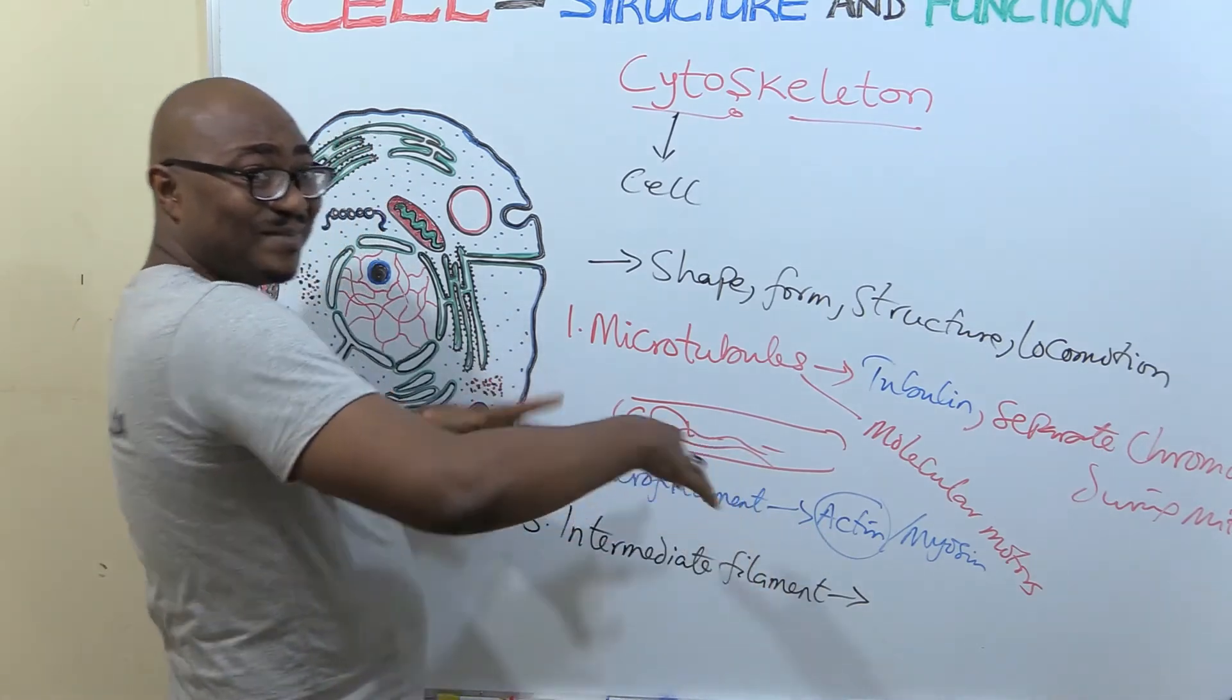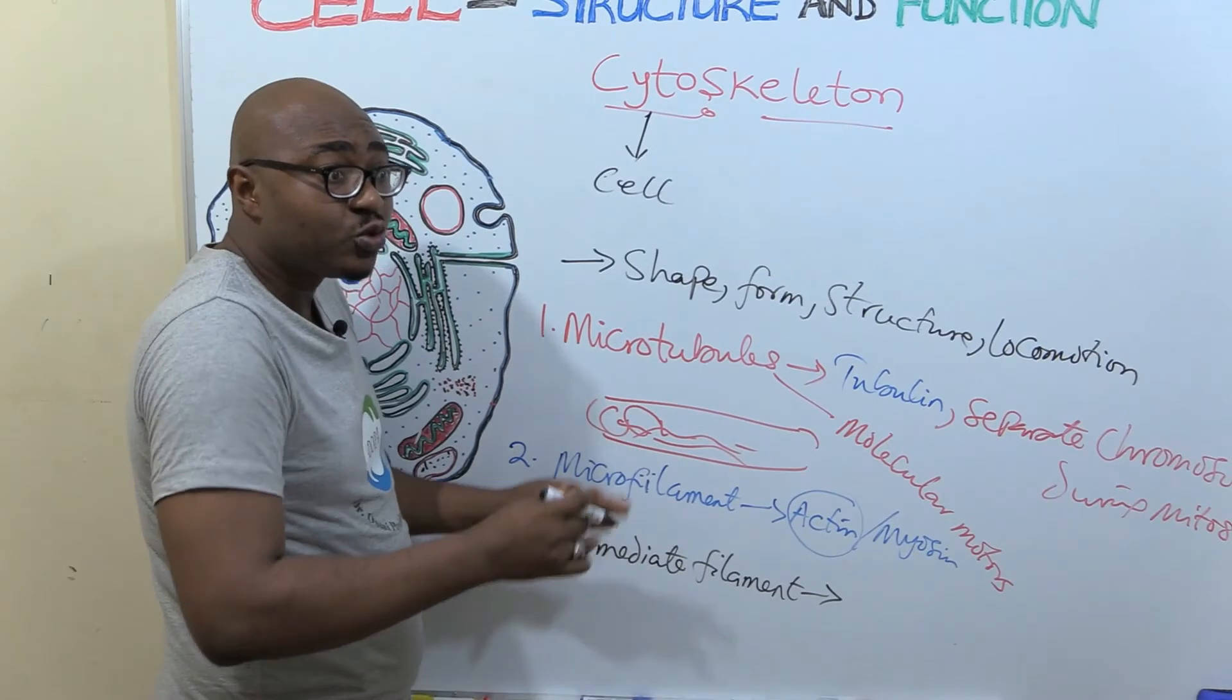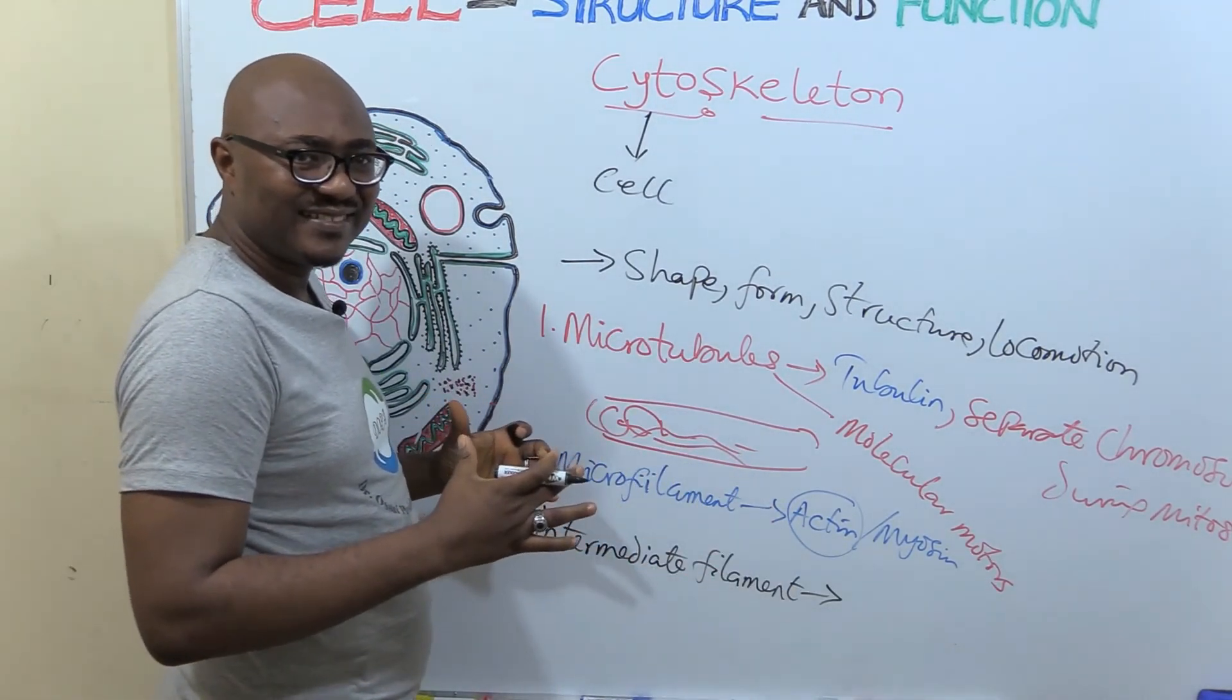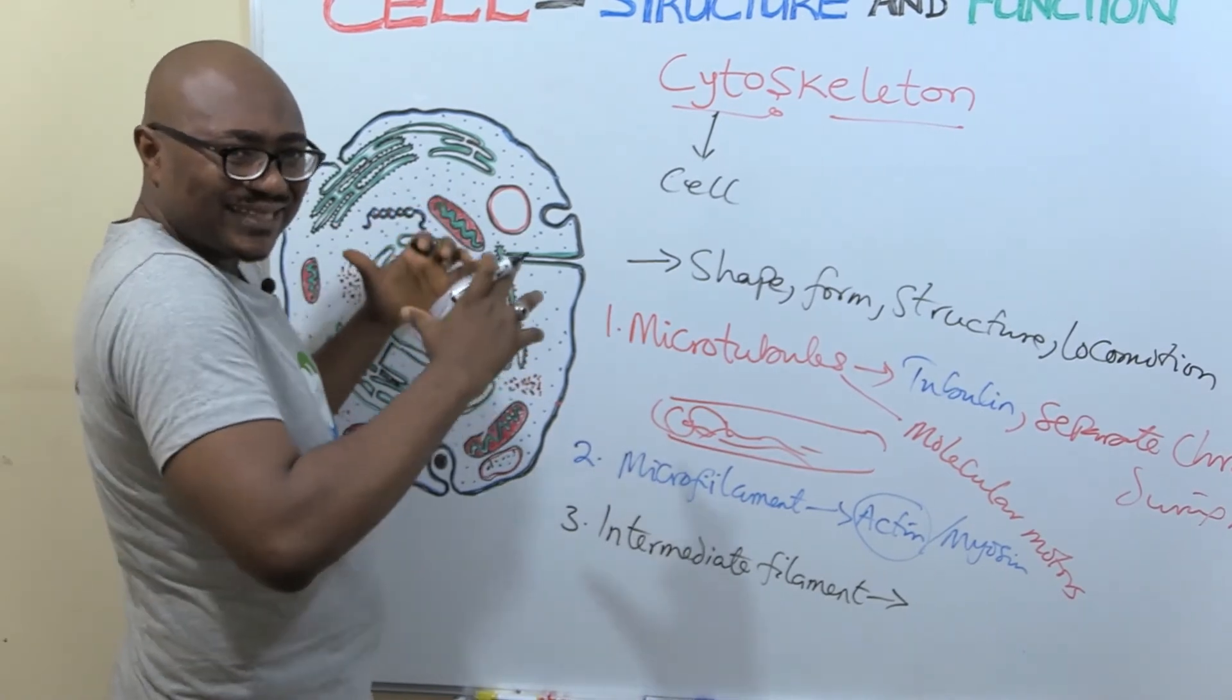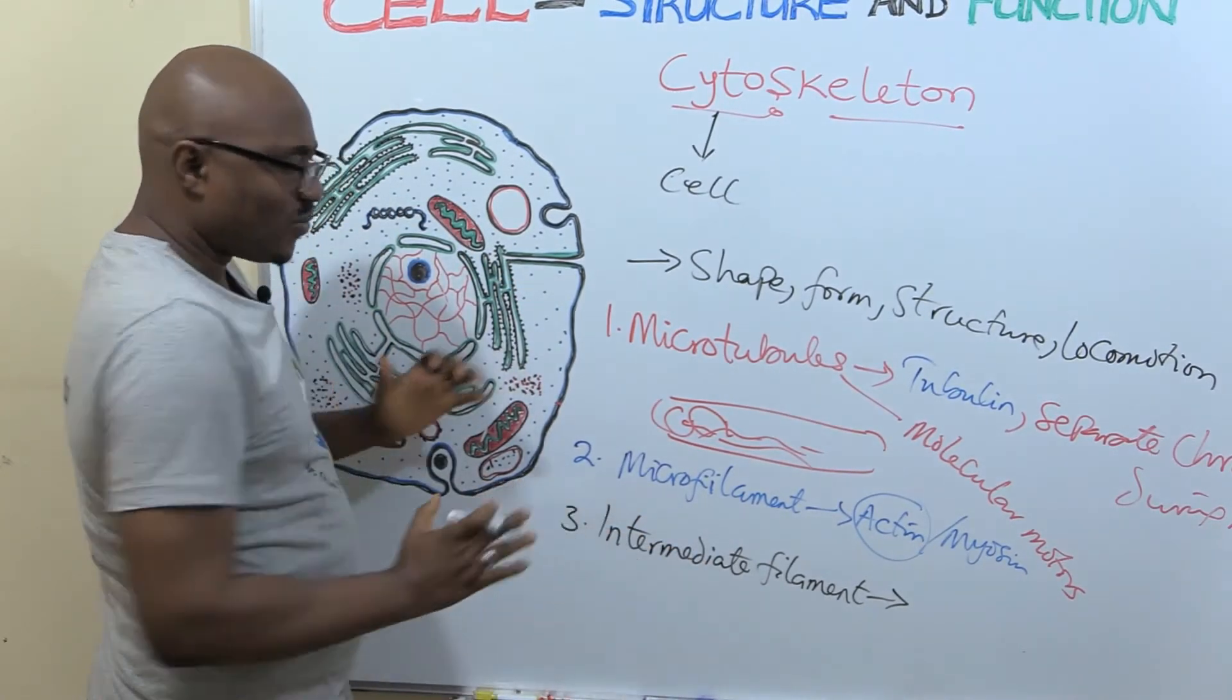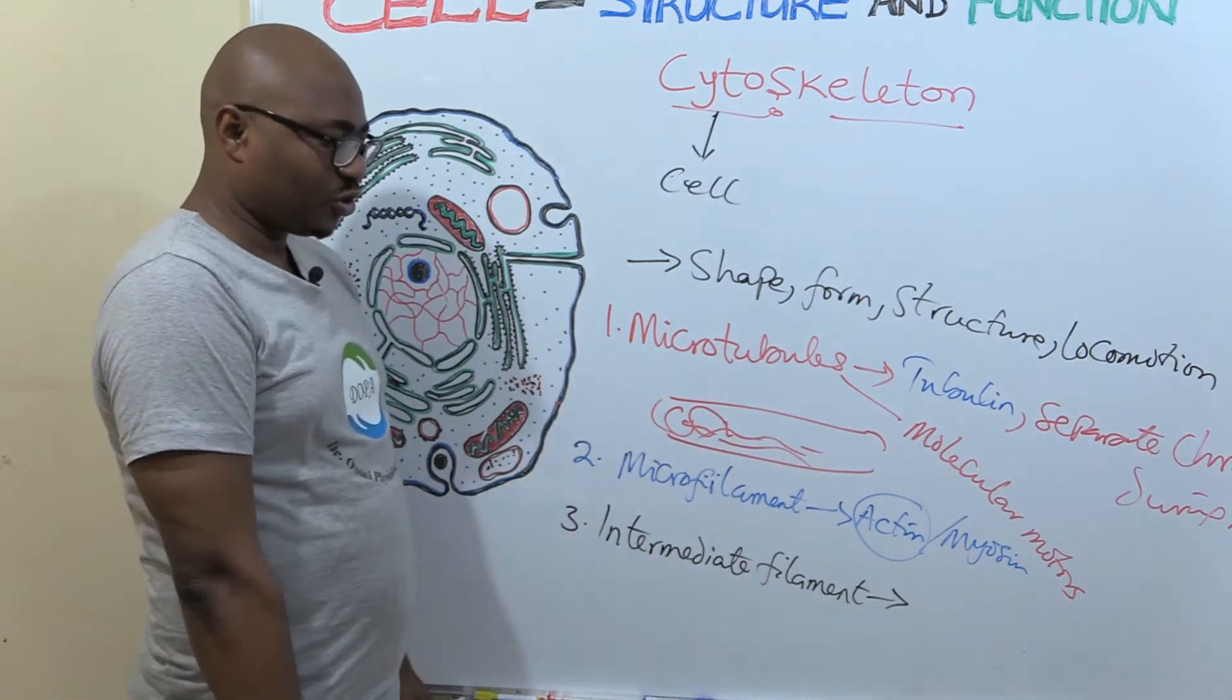So what is the function of intermediate filament? While actin helps to change shape, intermediate filament helps to stabilize the shape of the cell. So both of them are important. When the cell needs to maintain, so when we're talking about maintenance of shape, it's this intermediate. Then when it needs to move, hope it's not confusing.